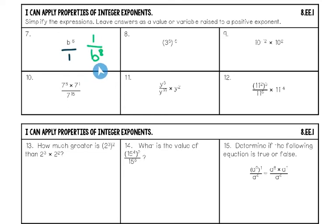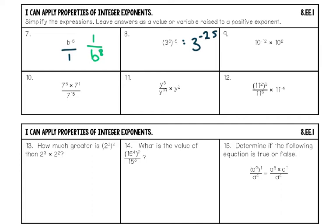Number eight has a couple of steps. First, apply the power rule: five times negative five is negative twenty-five, so this becomes 3 to the negative twenty-fifth power. Now in the apartment, 3 is on the top floor but not happy because the exponent is negative. It has to move to the bottom floor, and we put a one on top. Final answer: one over 3 to the twenty-fifth power.